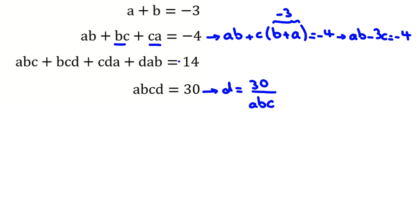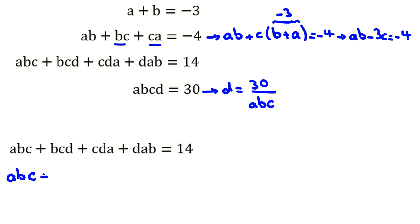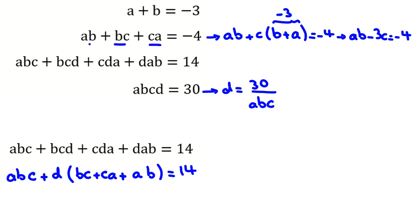Now for the third equation: abc + bcd + cda + dab = 14. I factor d from the last three terms: abc + d(bc + ca + ab) = 14. We know ab + bc + ca = -4, so this becomes abc - 4d = 14.